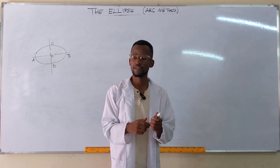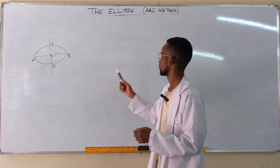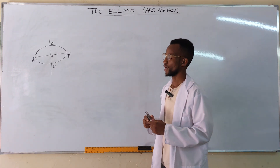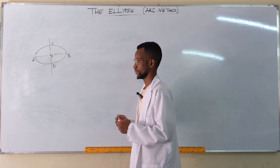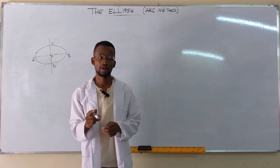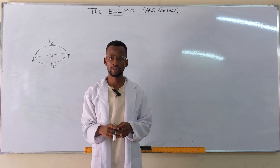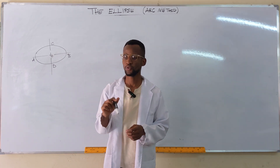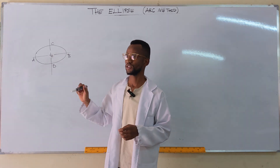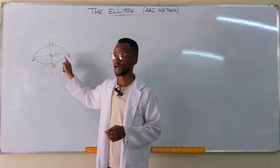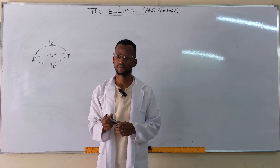Using the arc method, when you've been given an ellipse, there are what we call focal points. Those focal points are two points that are located on the major axis.